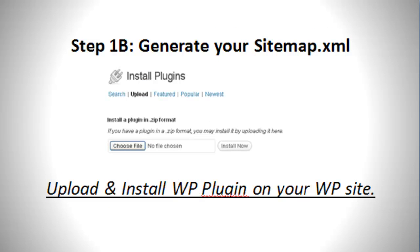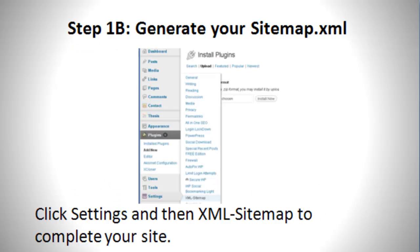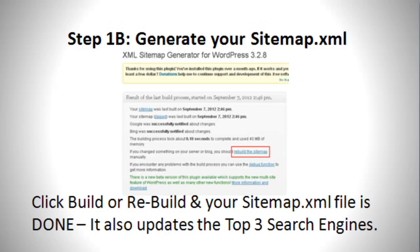Upload and install the WordPress plugin on your WordPress site. Next, click Settings and then XML Sitemap to complete your sitemap setup. All you really need to do is click on the Build or Rebuild option and your sitemap.xml file is done. It also updates the top three search engines for you.